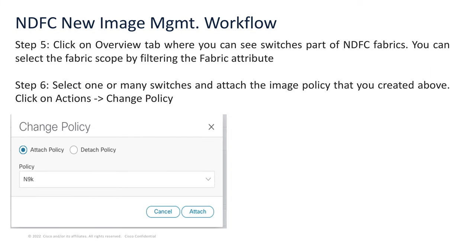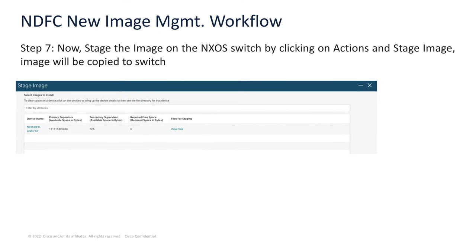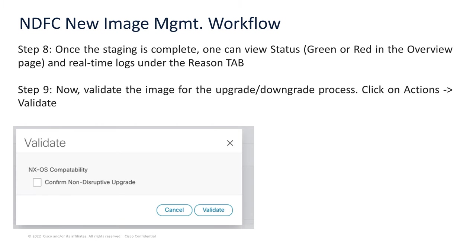Thereafter, we can click on overview and go into the switches part of the NDFC fabric. You can select the fabric scope by filtering the fabric attribute. We can now select one or many switches and attach the policy we've just created using the actions change policy option — all the policies that exist in the repository will show in the drop-down. The next step is to stage the image, which is where the image will be copied into the switch. This can be done by going into the action and stage image operation. Once staging is complete, we can view the status — it will either be green or red — and also look at real-time logs in the reason section.